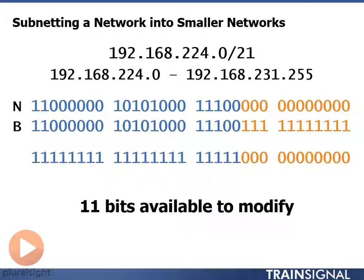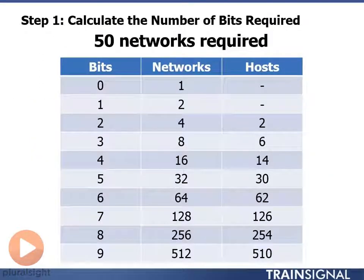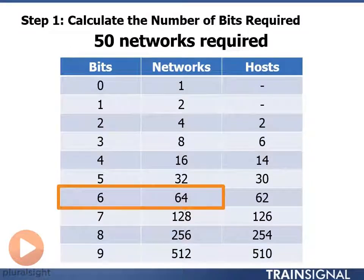This means we have 11 bits of the address to modify. We're going to find out how many bits we need to borrow for 50 networks. 32 is too few, 64 is too many but will work, so we need to borrow 6 bits.